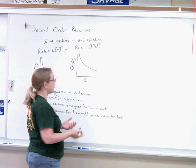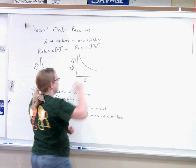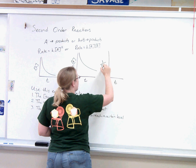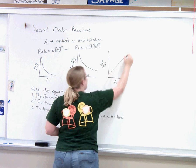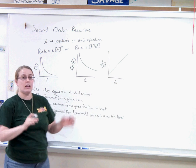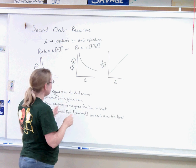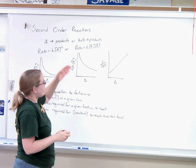So how do we get a straight line for second-order? You have to plot time versus the inverse of the concentration of the reactant, and that will give you a straight line. Don't ask me why, it's just what happens mathematically.